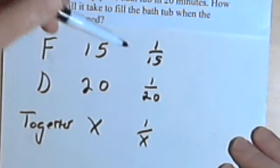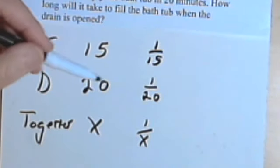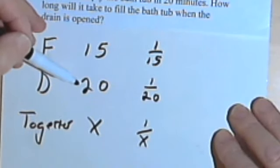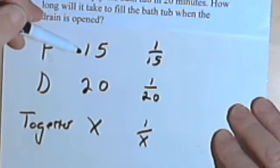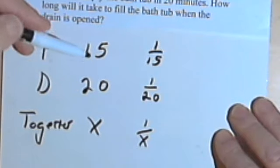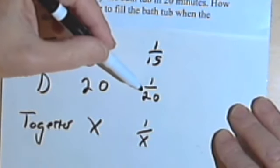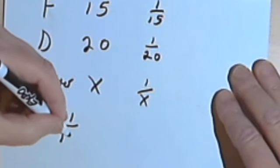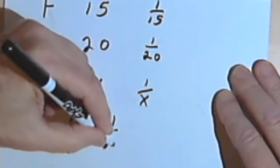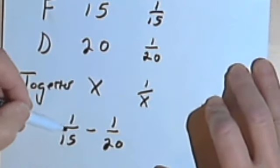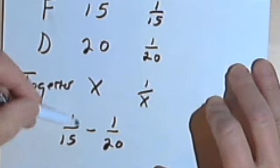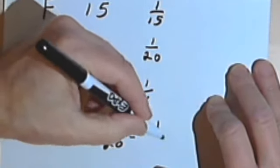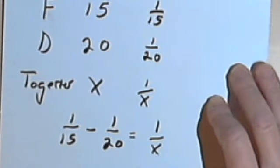So we want to combine these. Now here's the thing that's important. This drain is not helping. In other words, it's not going to go faster if the drain is left open. So the drain, this one twentieth, is going to be subtracted. Here's what we've got. One over fifteen minus one over twenty. In other words, the faucet is filling the bathtub. The drain is emptying it. And now let's see how long it takes to fill the bathtub with the drain open.